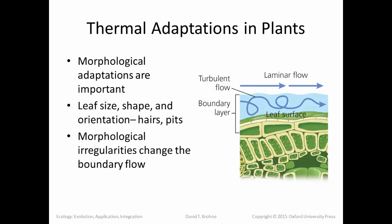Plants also have to deal with thermal regulation, though it's a very different phenomenon. We see morphological changes — leaf size and shape, how leaves are oriented towards the sun, whether they have thick waxy surfaces, reflective surfaces, hairs or pits. All these morphological features change the airflow over the surface of the leaf and also the amount of sunlight it absorbs, thus helping it to regulate temperature.